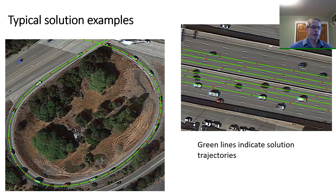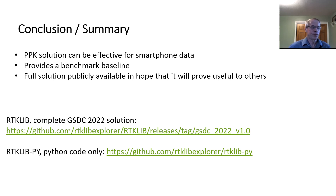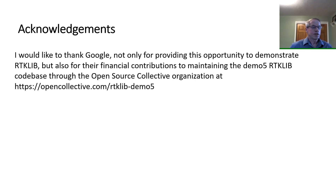Sometimes numbers by themselves are hard to visualize, so I provided a couple of typical results superimposed onto Google Earth maps. The green lines are the RTKLib PPK solutions. To summarize this effort, it shows that PPK solutions can be effective for smartphone data if appropriately optimized, and it provides a benchmark baseline for a conventional PPK solution for this dataset, which will hopefully be adopted as a standard dataset for further work. I hope that making this solution publicly available will prove useful for further work in this area. I'd like to thank Google not only for providing this opportunity to demonstrate RTKLib, but also for their financial contributions to maintaining the Demo 5 RTKLib codebase through the Open Source Collective organization. Thank you very much.